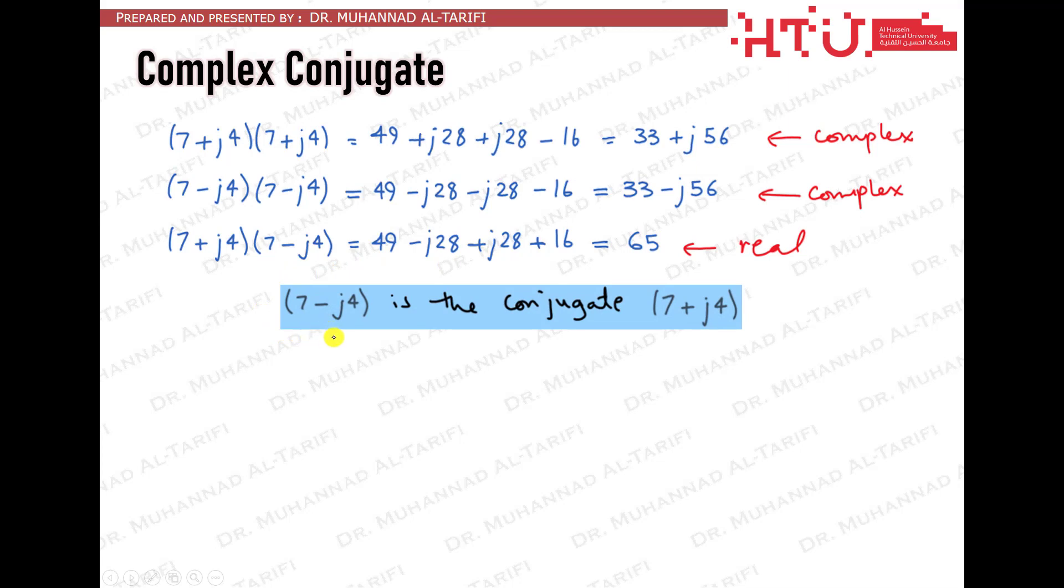The real reason is that 7 minus j4 is the conjugate of 7 plus j4, and vice versa. 7 plus j4 is the conjugate of 7 minus j4. And when multiplying a complex number by its conjugate, you always get a real number.